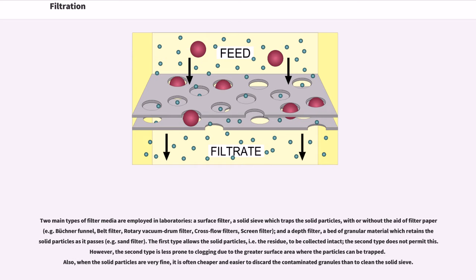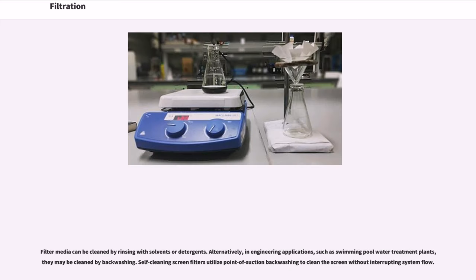The first type allows the solid particles, i.e. the residue, to be collected intact. The second type does not permit this. However, the second type is less prone to clogging due to the greater surface area where the particles can be trapped. Also, when the solid particles are very fine, it is often cheaper and easier to discard the contaminated granules than to clean the solid sieve.